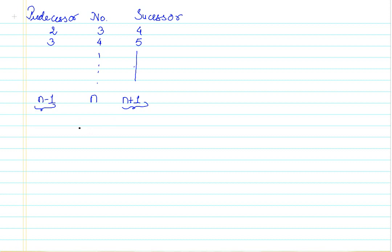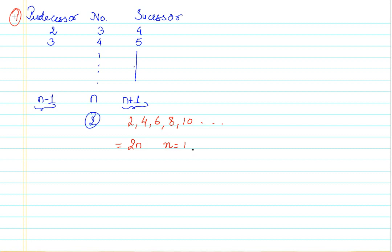Let's take one more example. I have some numbers here: 2, 4, 6, 8, 10 and so on. If you see these numbers, they are more like multiples of 2. So if I have a number that is a multiple of 2, I can denote this with 2n. If I put n equal to 1, I get 2. When I put n equal to 2, I get 4. When I put n equal to 3, I get 6 and so on. So 2n becomes my algebraic expression.